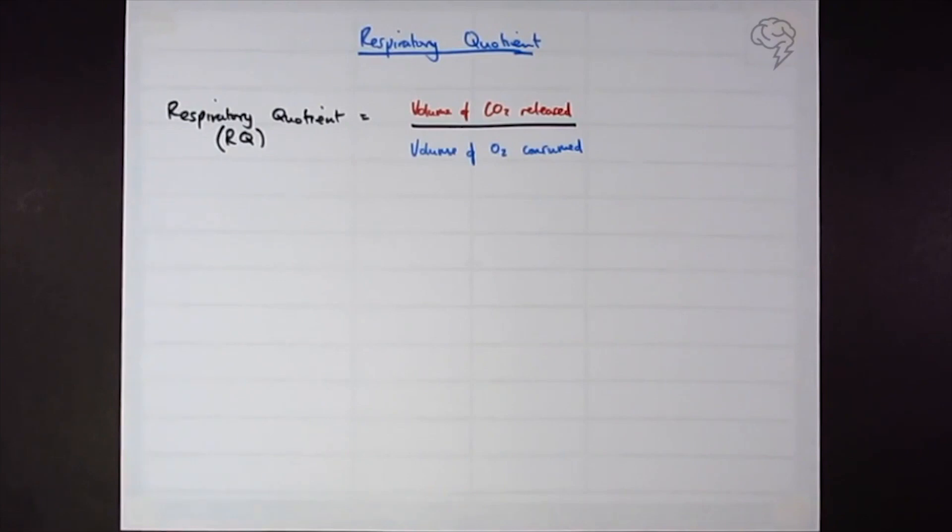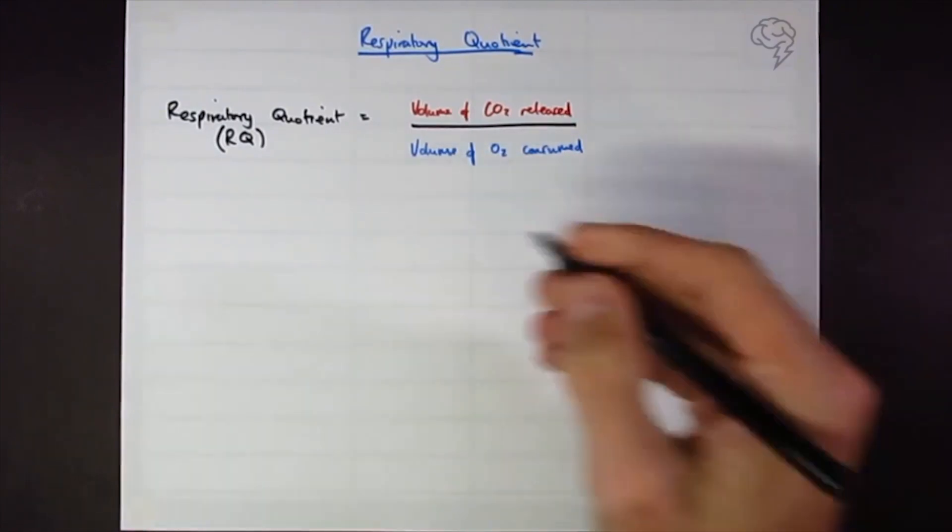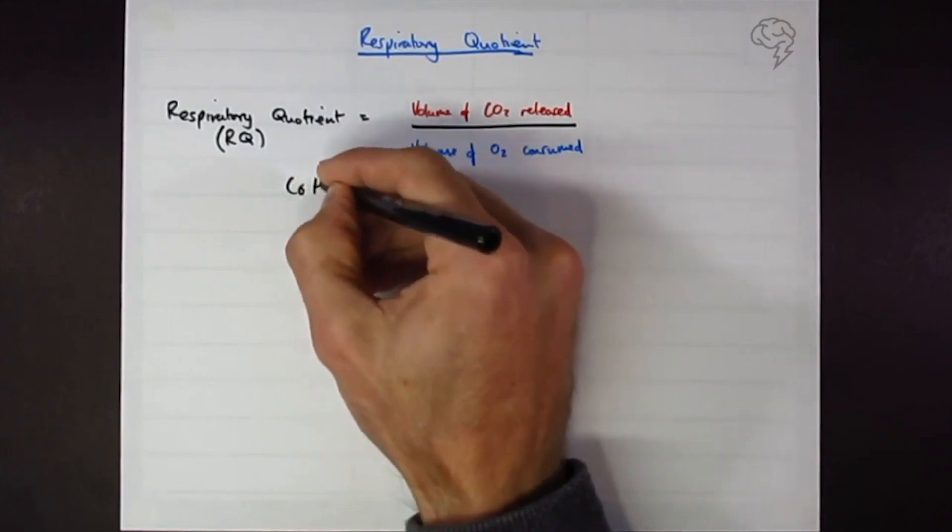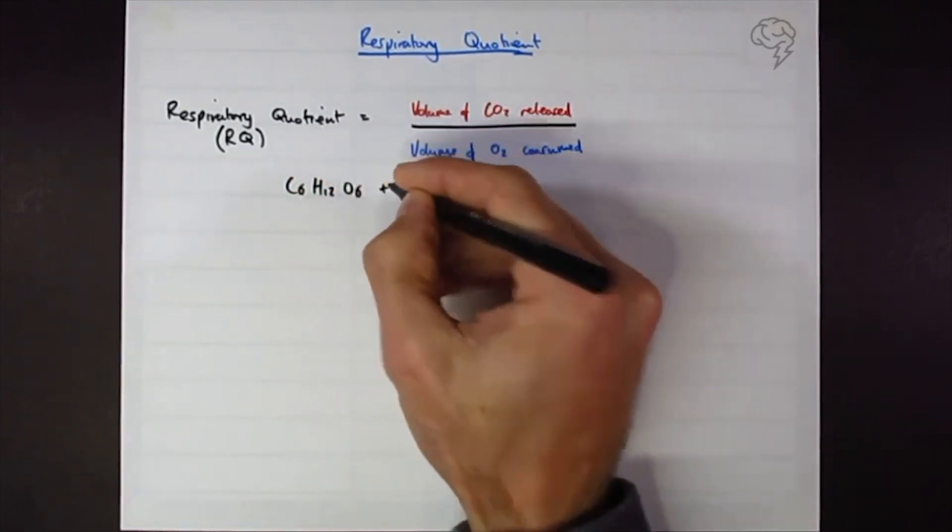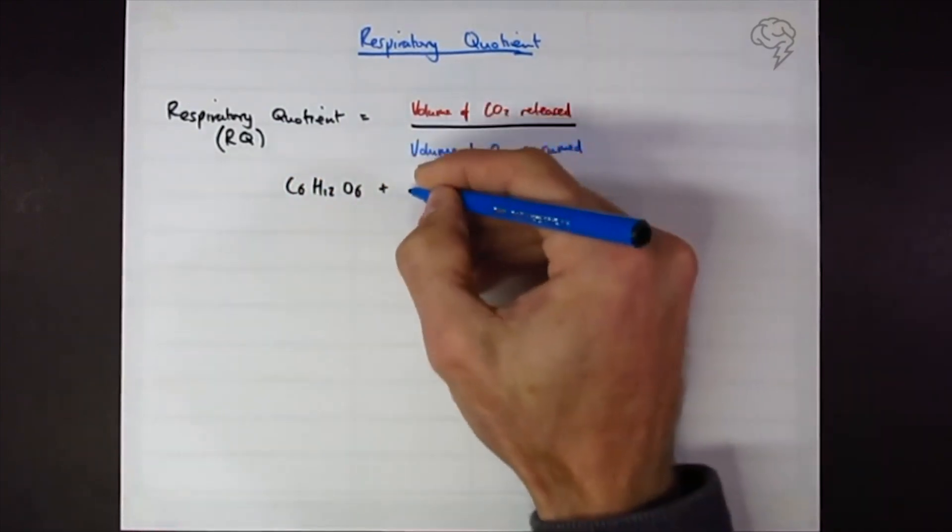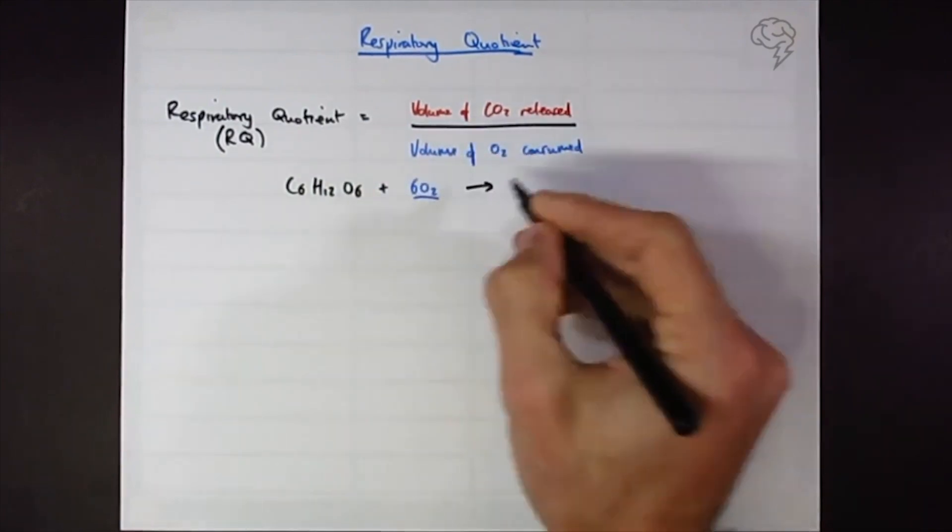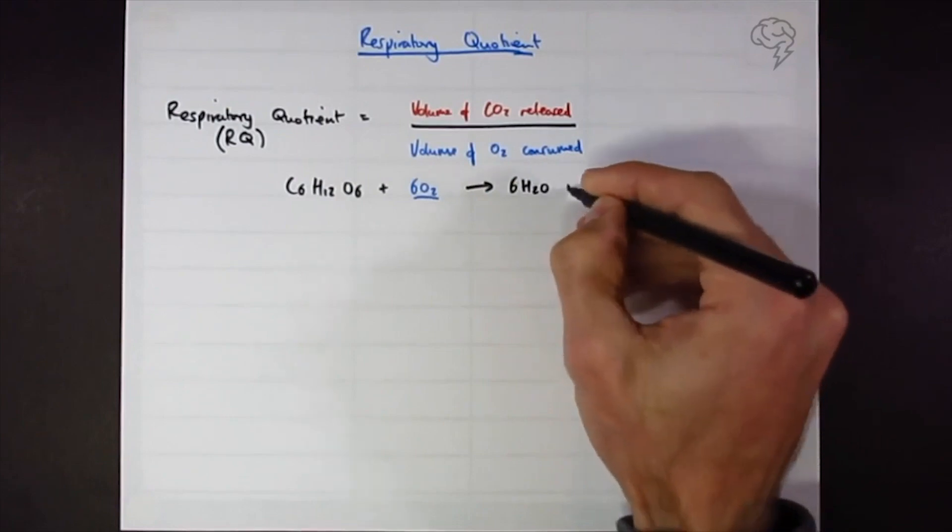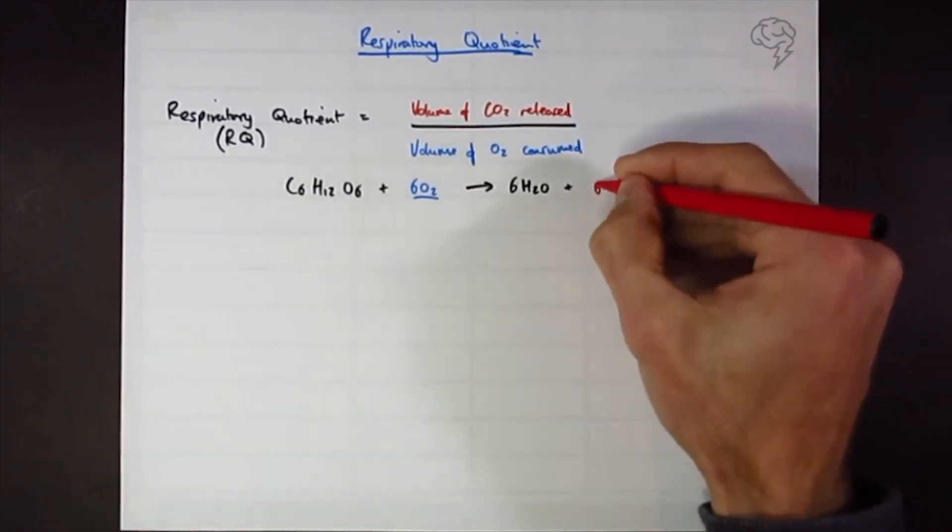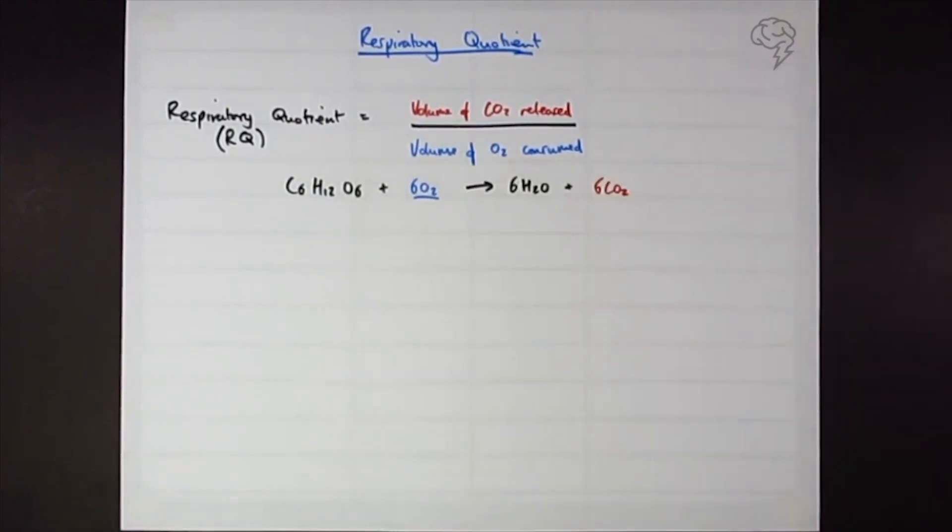Let's take glucose as a respiratory substrate to begin with. Glucose is C6H12O6 and we combine that with six molecules of oxygen and we form six water, six H2O, and six carbon dioxide.